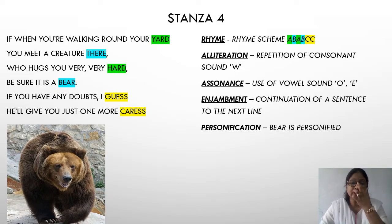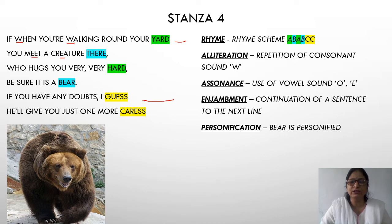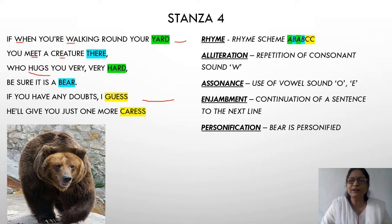In the fourth stanza, again rhyme scheme A-B-A-B-C-C. You have alliteration — the repetition of the consonant sound W: 'when' and 'walking.' Then assonance: the use of the vowel sound O and also E — 'meat,' 'creature.' And you have enjambment: continuation of the sentence to the next line, in the first and second line, and also in the fifth and sixth line. You also have personification: the bear is personified, because only human beings can hug one another, and here the bear is shown hugging — so the bear is personified.